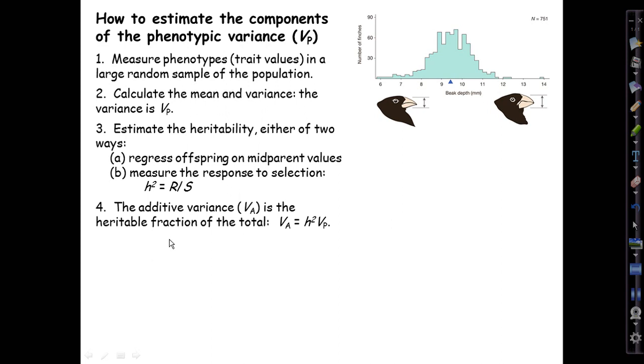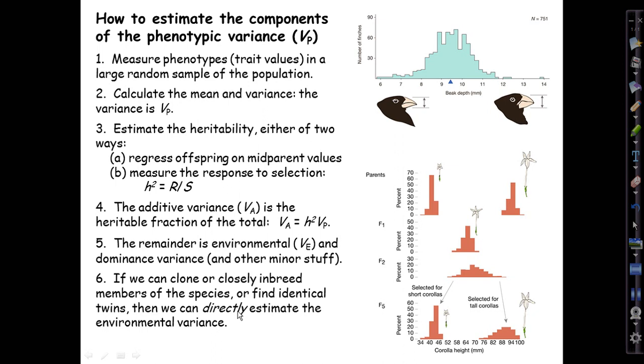The additive variance is the heritable fraction of the total, so we can estimate it as V-sub-a equals V-sub-p times h-squared, since that is the meaning of h-squared: it's the fraction of the total phenotypic variance that is additive genetic. The remainder is the environmental variance V-sub-e and the dominance variance V-sub-d, and other minor components like V-sub-i.